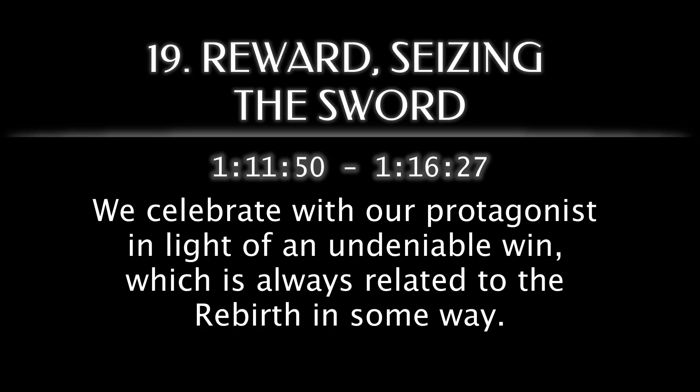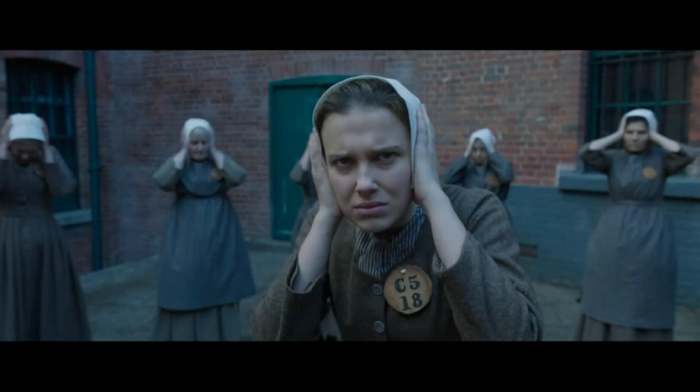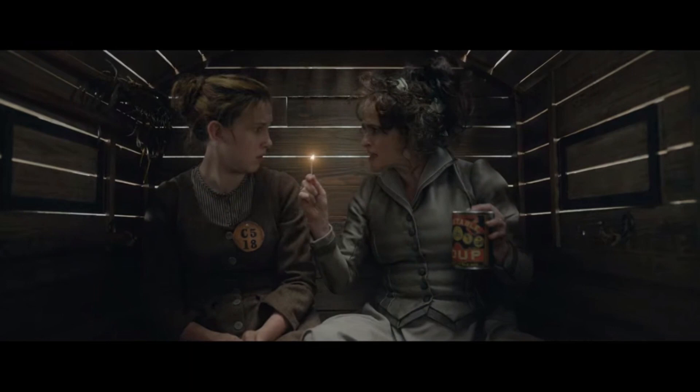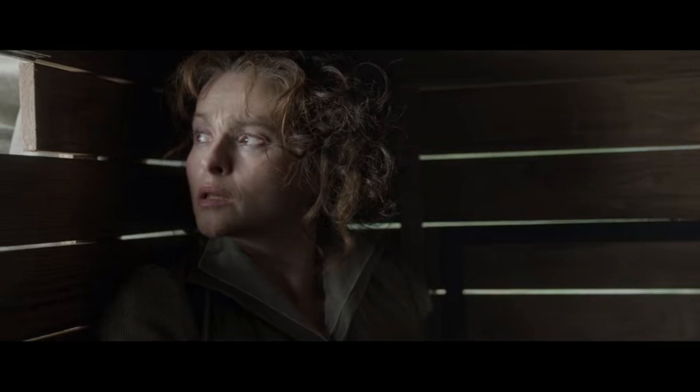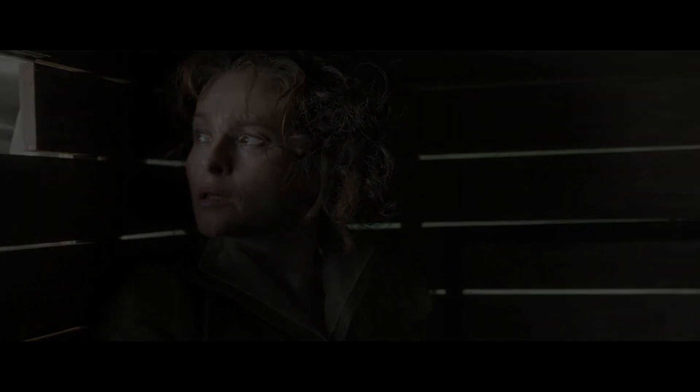We celebrate with our protagonist in light of an undeniable win, which is always related to the rebirth in some way. Edith and Eudoria stage a jailbreak to rescue their favorite detective, who then confirm everything about Enola's case and deductions, and give her a direction to look into and what information to seek.